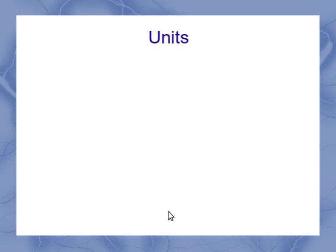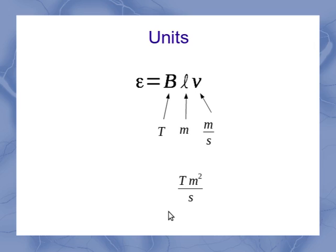Looking at the units for this equation, we note that the standard unit for magnetic field is Tesla, or capital T. The standard unit for length is going to be meters. And the standard unit for velocity is going to be meters per second. Putting that all together, we end up with Tesla meters squared per second.